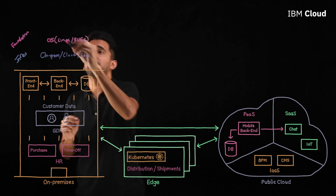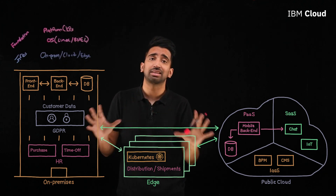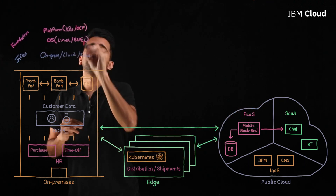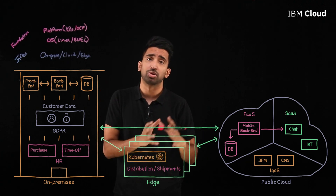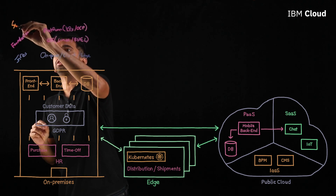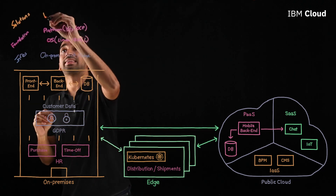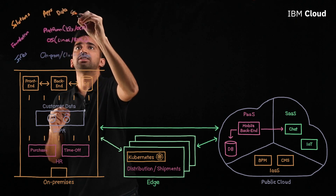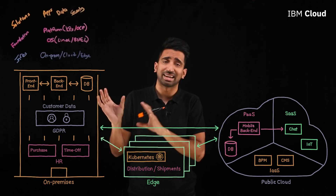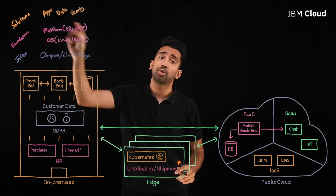That brings us to the platform layer, where they'll be running something like Kubernetes. Kubernetes gives you a consistent container-based environment that works in any location — on-premise, edge, or the cloud. You can even take it a step further with OpenShift Container Platform, which gives you an enterprise-supported approach to containers that runs anywhere. Finally, the key to all of this is the solutions layer. This consistency and standardization enables customers to focus on standardized solutions across the board — things like the apps they're developing, the data they need to manage, or security solutions. Other use cases include integration, managing multiple cloud environments, and automation.